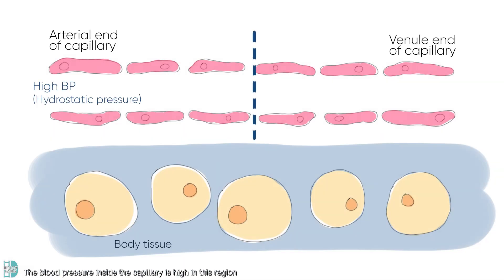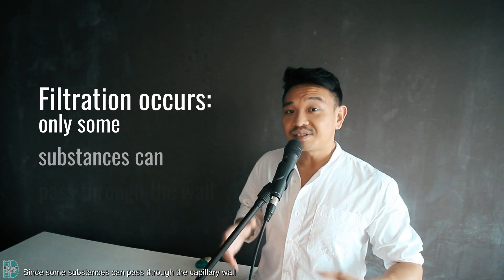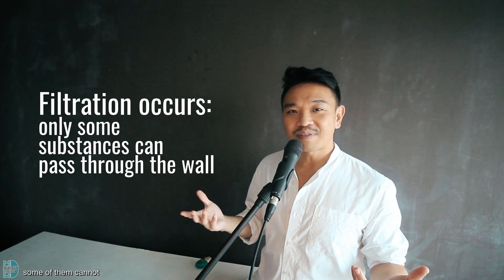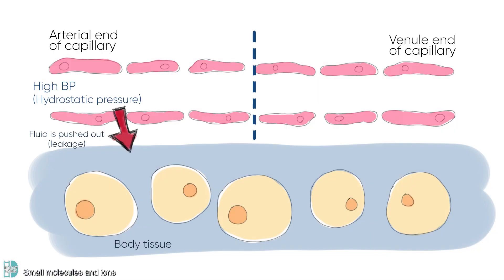Let's look at the arterial end of a capillary first. The blood pressure inside the capillary is high in this region. This high hydrostatic pressure causes fluid to be pushed out into the tissue — it can also be called leakage. Since some substances can pass through the capillary wall and some cannot, filtration of blood occurs.